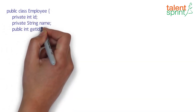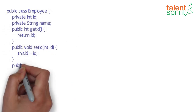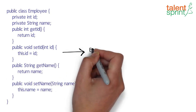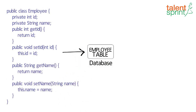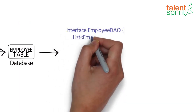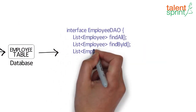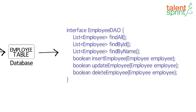Let's say we have an entity to represent an employee. The employee entities will be persisted into a corresponding employee table in a database. A simple DAO interface to handle the database operations required to manipulate an employee entity will look like the example shown.